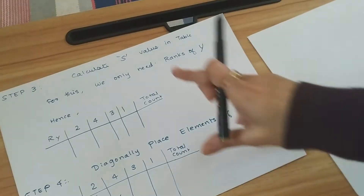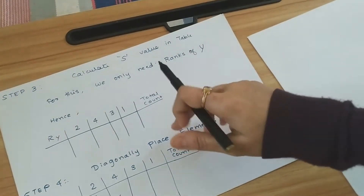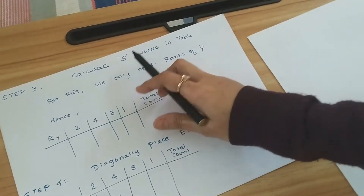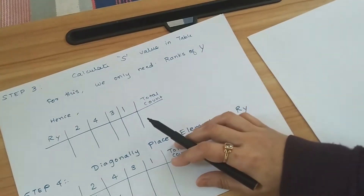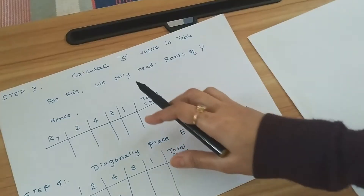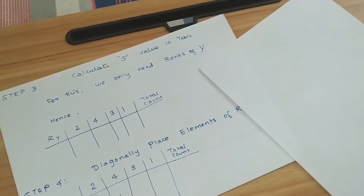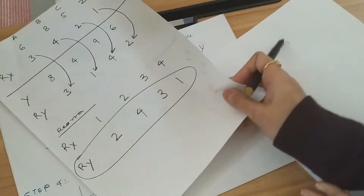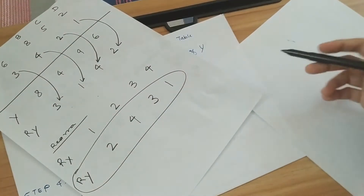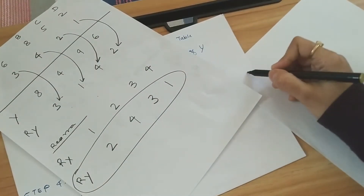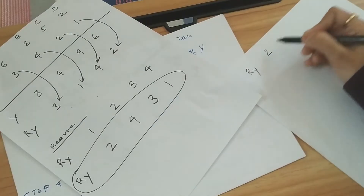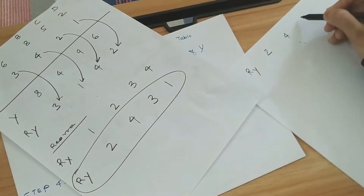In step 3, we calculate the S value. For this we need only the ranks of Ry. The ranks of Y we received are: Ry = 2, 4, 3, 1.